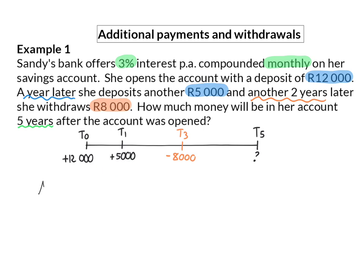We want to calculate the future value of each of these amounts. Starting with the 12,000 rand, I want to calculate the value of the 12,000 rand in five years' time. It will receive the interest of 3% compounded monthly for five years' worth of months, and that is 5 times 12, which will be 60 months.